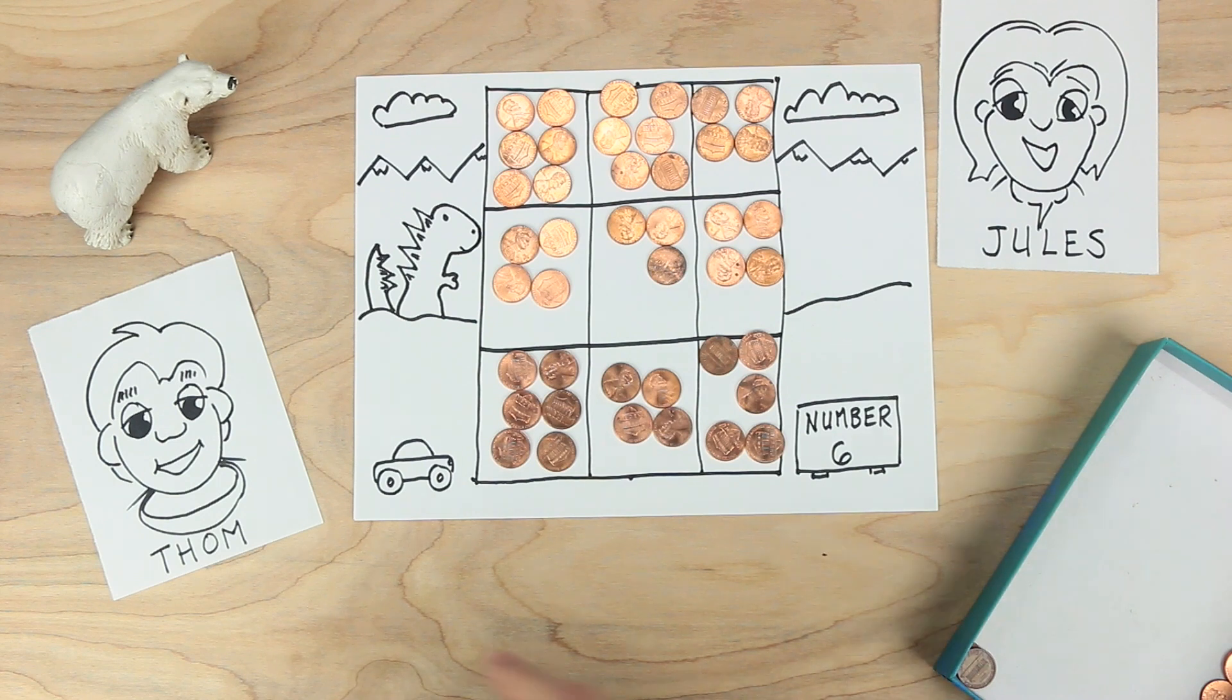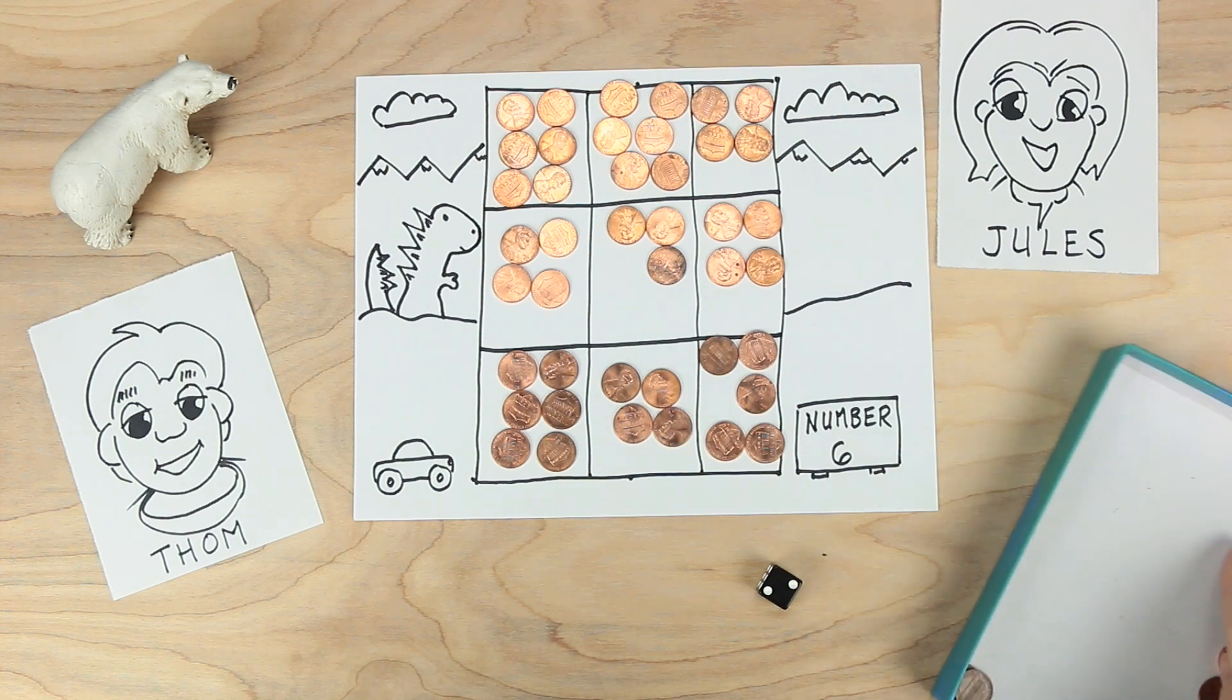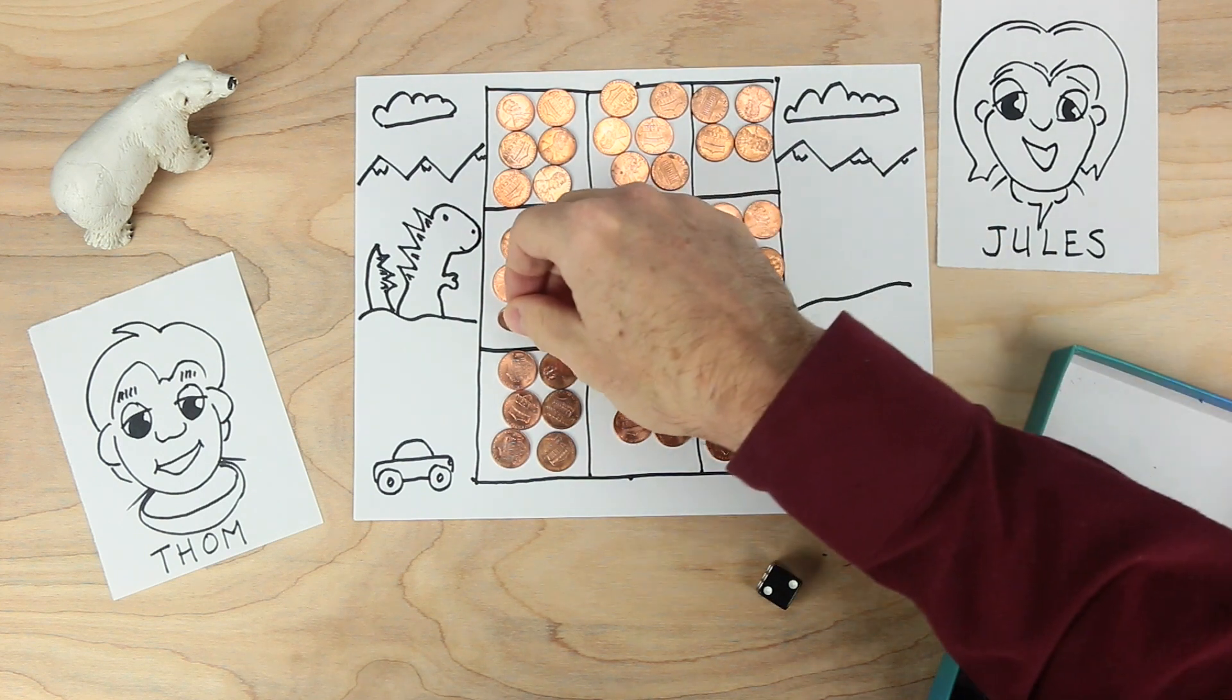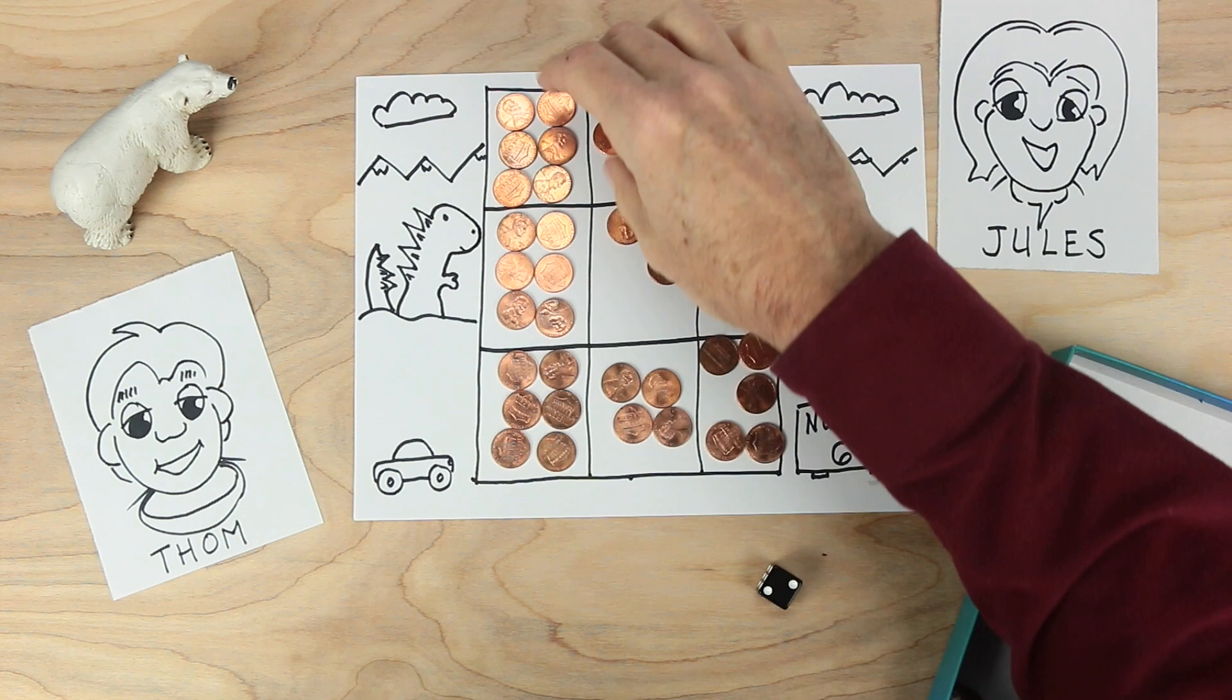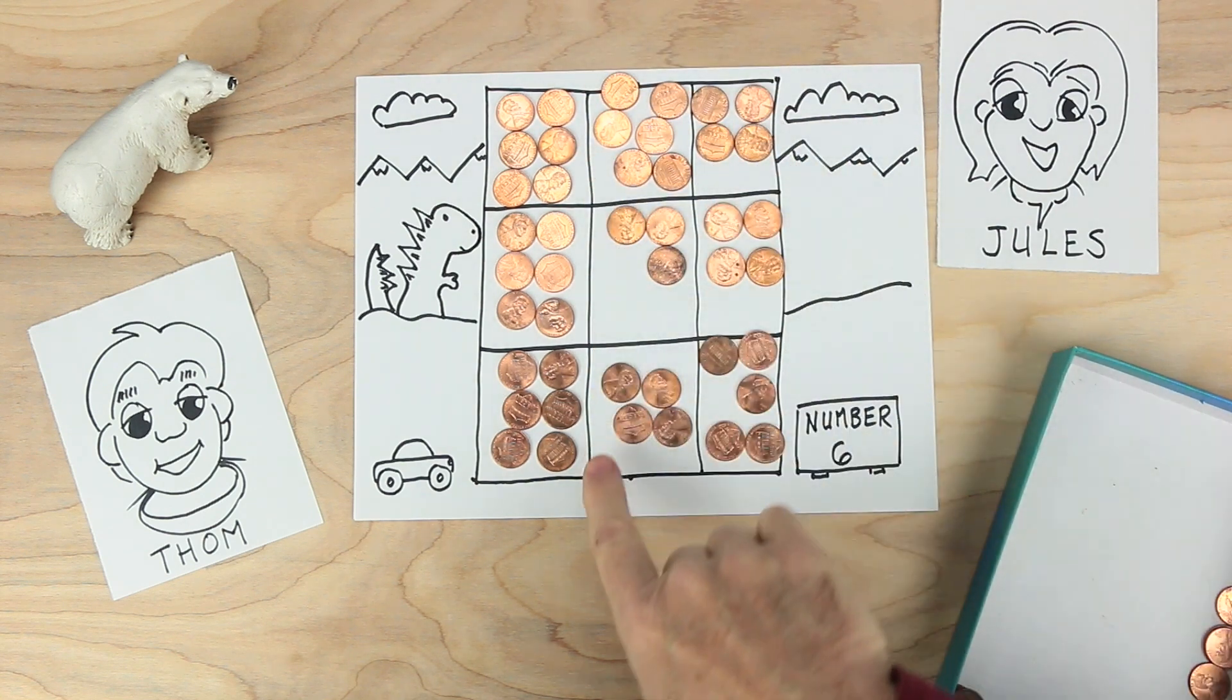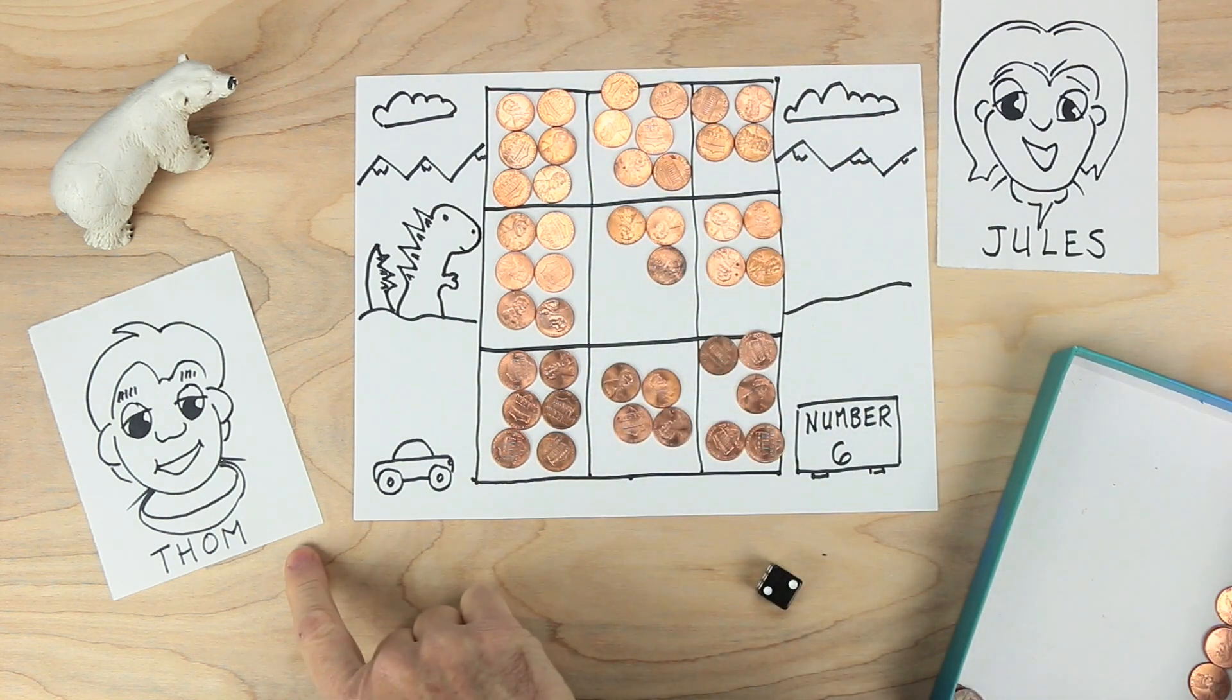So now it's Tom's turn. And Tom rolls a two. Where's Tom going to put this two? Tom decides to put this two right here. And if you look, there's six here, six here, and six here. So Tom is the winner.